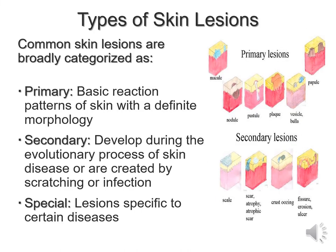What are some of the types of skin lesions broadly speaking? Common skin lesions are broadly categorised as primary, secondary and special. Primary lesions have basic reaction patterns of skin with a definite morphology — that is, what they look like. Secondary lesions develop during an evolutionary process of skin disease, occurring because of diseases and created by scratching or infections. Special lesions are related to certain specific diseases.